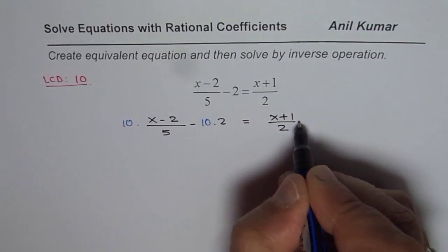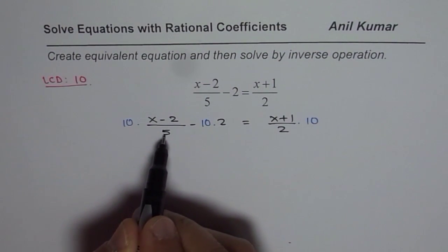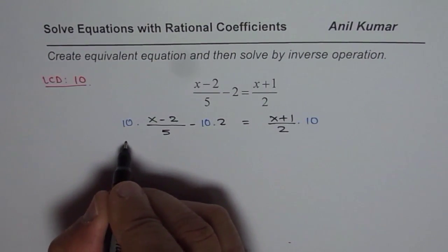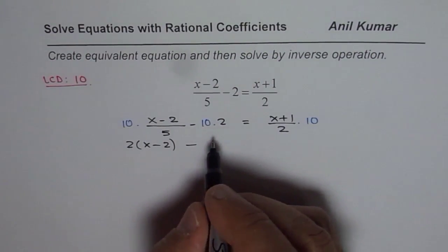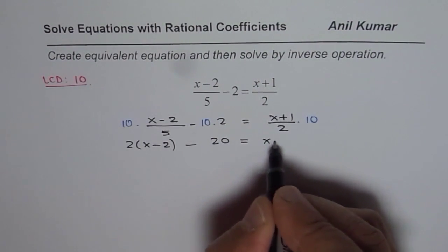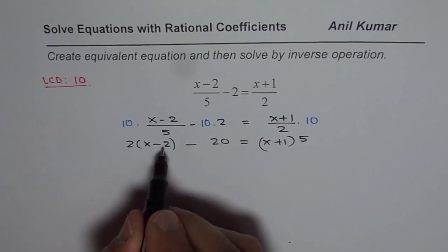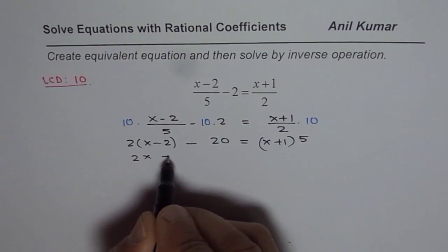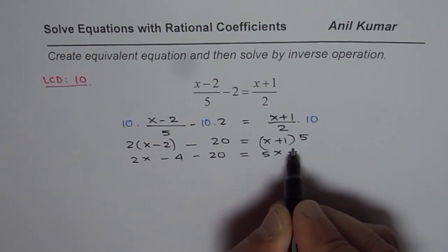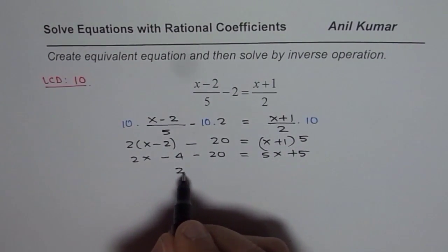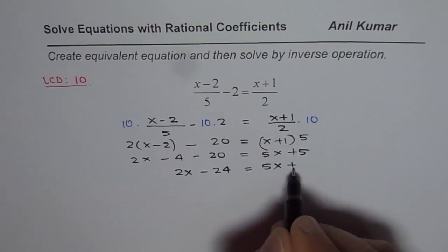So that is what it means — times 10. Multiplying by 10 and dividing by 5 results in 10 divided by 5, which is 2. So I can write this as 2 times (x minus 2), and here we have minus 20, equals (x plus 1) times 10 divided by 2, which is 5. Now we can expand and simplify: 2x minus 4 minus 20 equals 5x plus 5. The left side is effectively 2x minus 24 and the right side is 5x plus 5.